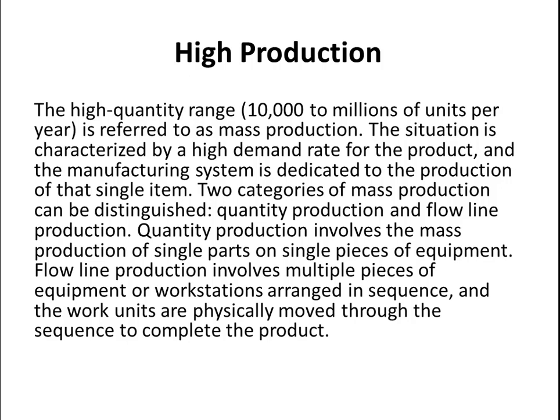Quantity production involves the mass production of single parts on single pieces of equipment. Flow line production involves multiple pieces of equipment or workstations arranged in sequence, and the work units are physically moved through the sequence to complete the product. For example, production of millions of units per year. So there are two types: quantity production and flow line production.